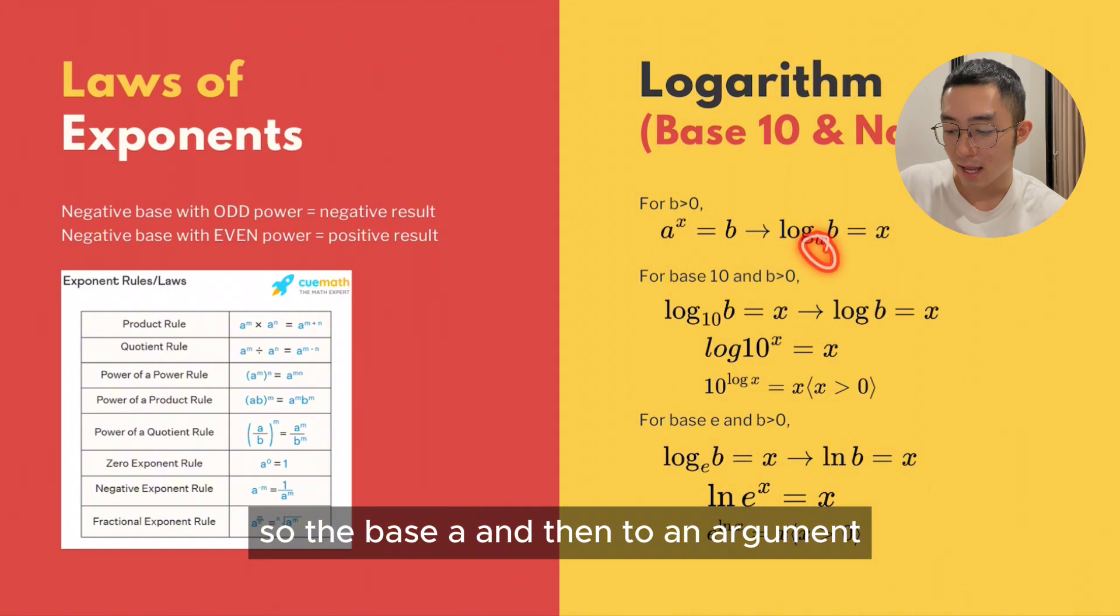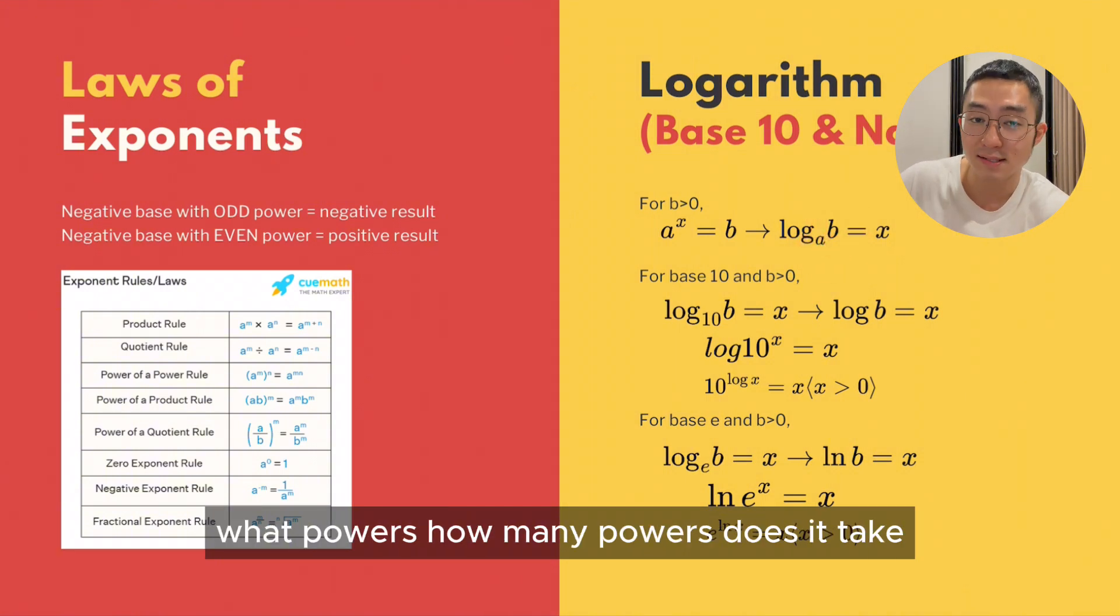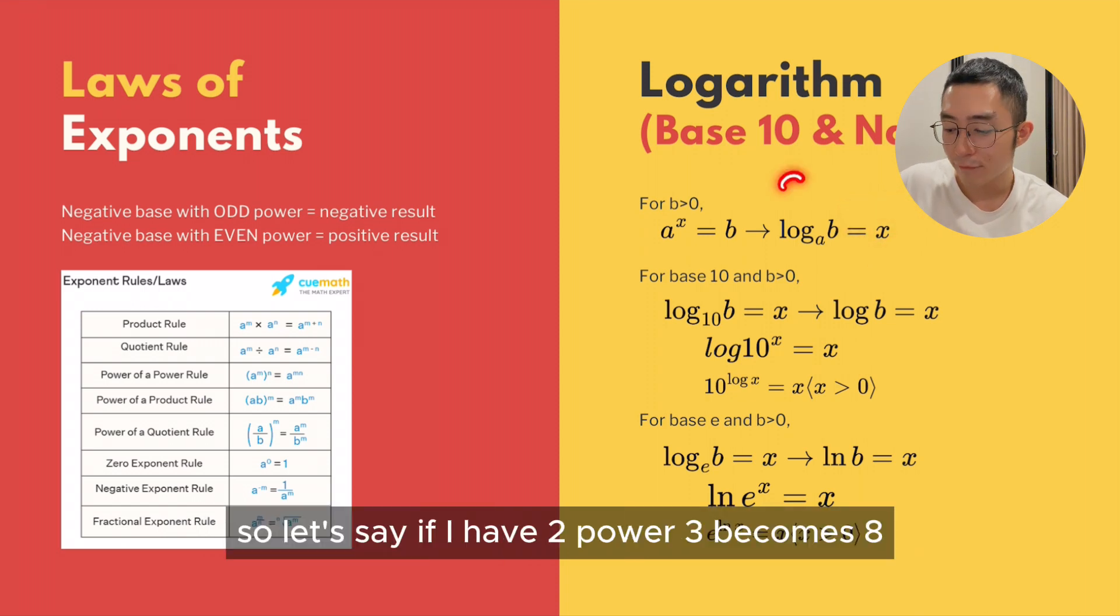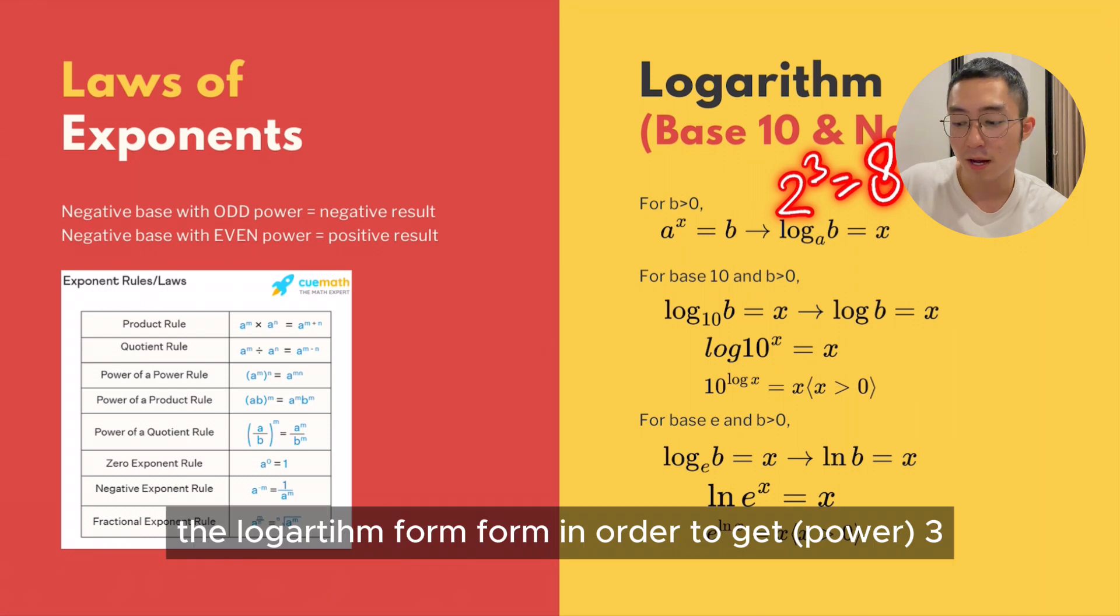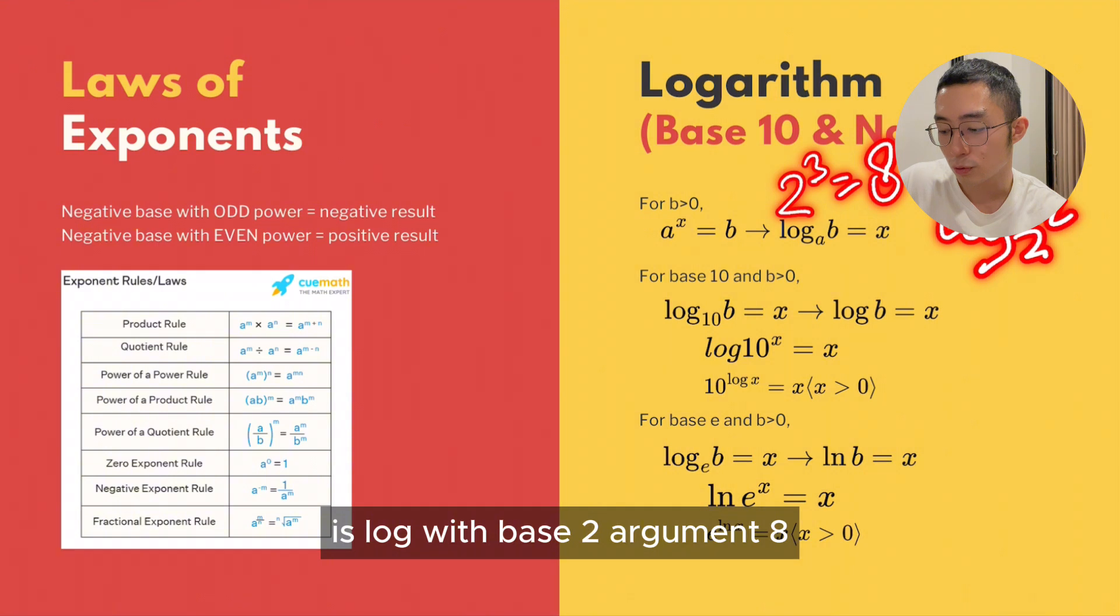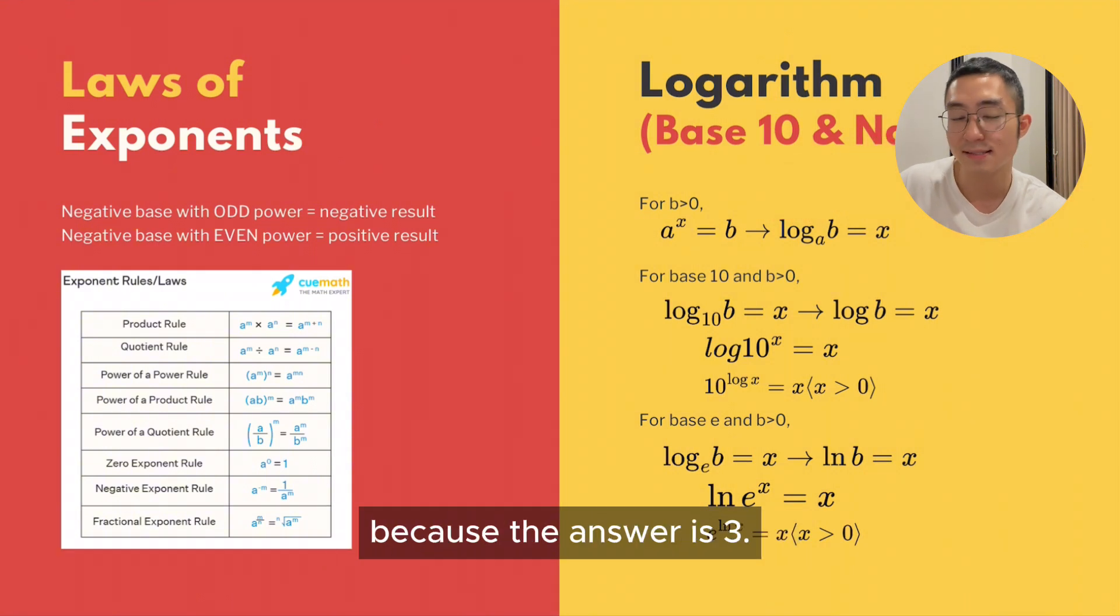The base A and then to an argument, what powers, how many powers does it take? That's X. So if I have 2 power 3 becomes 8, the logarithmic form in order to get number 3 is log base 2 argument 8, because that's the answer is 3.